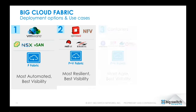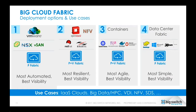Big Cloud Fabric can be deployed in several ways. The primary use case — which we'll focus on today — is deployment alongside VMware solutions such as NSX, vSAN, and vSphere. It can also be used without an overlay alongside OpenStack or container orchestrators like Kubernetes or Red Hat, or as a standalone networking solution without third-party orchestrator integration.